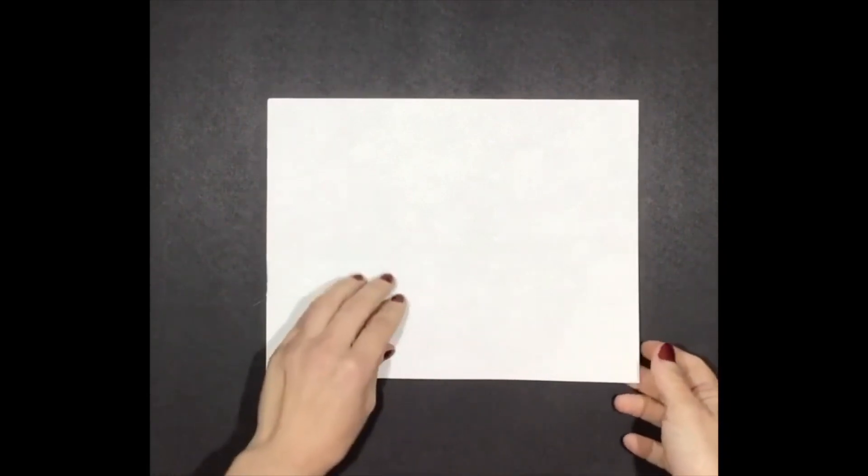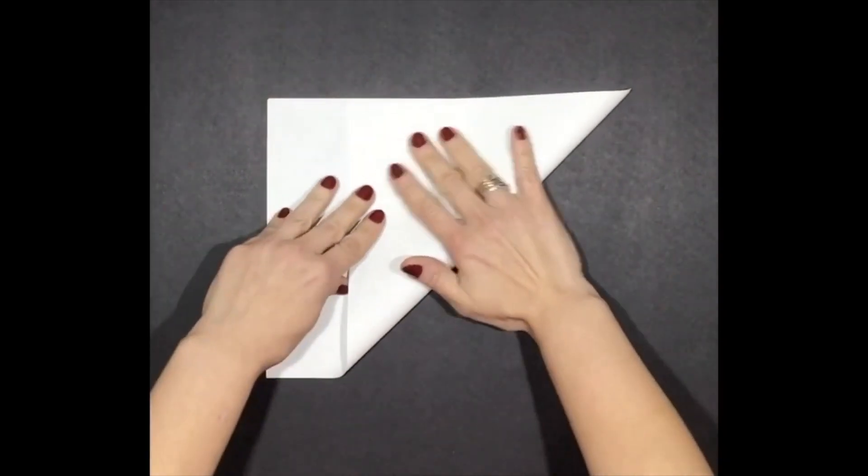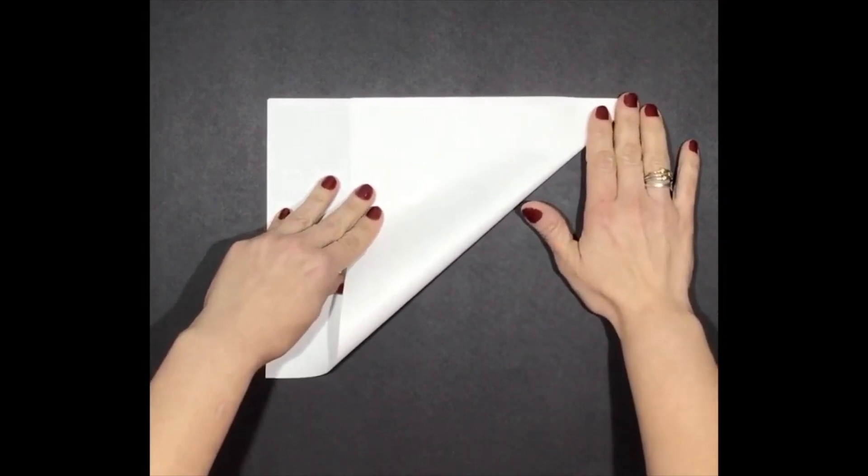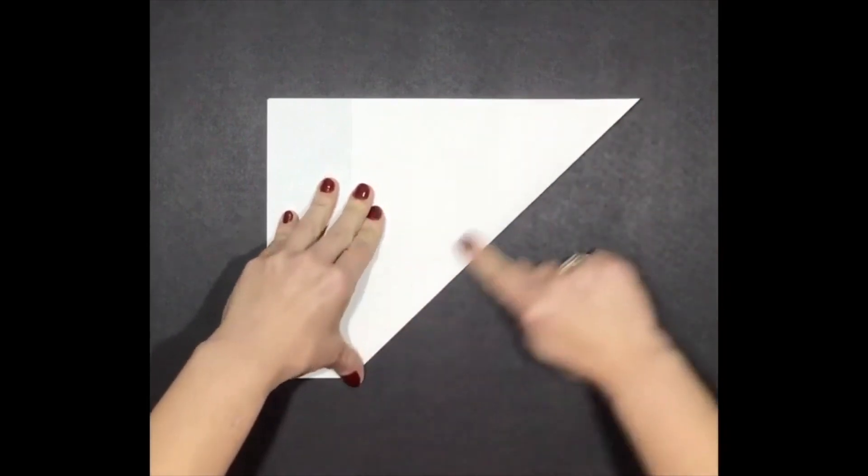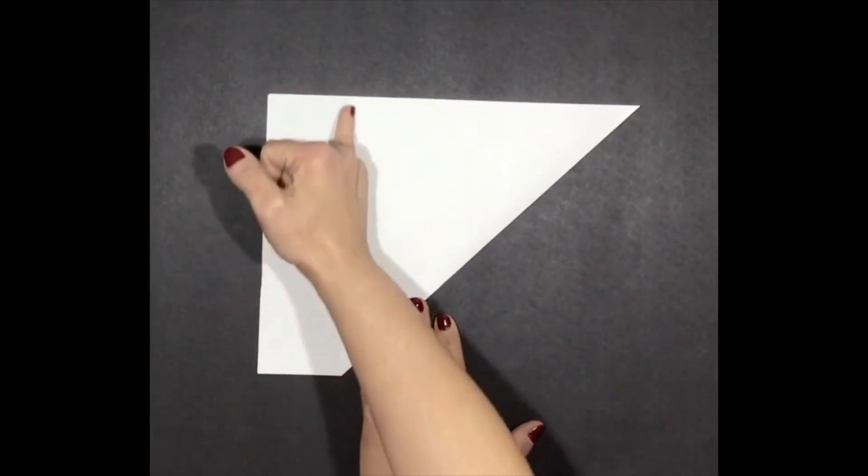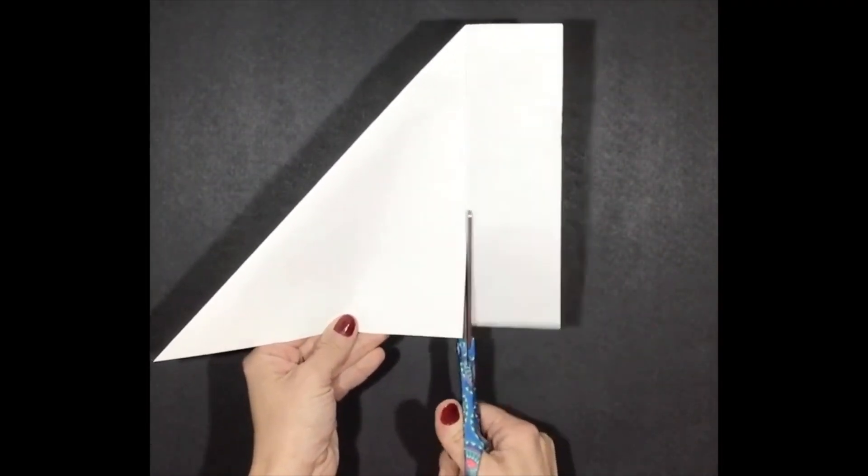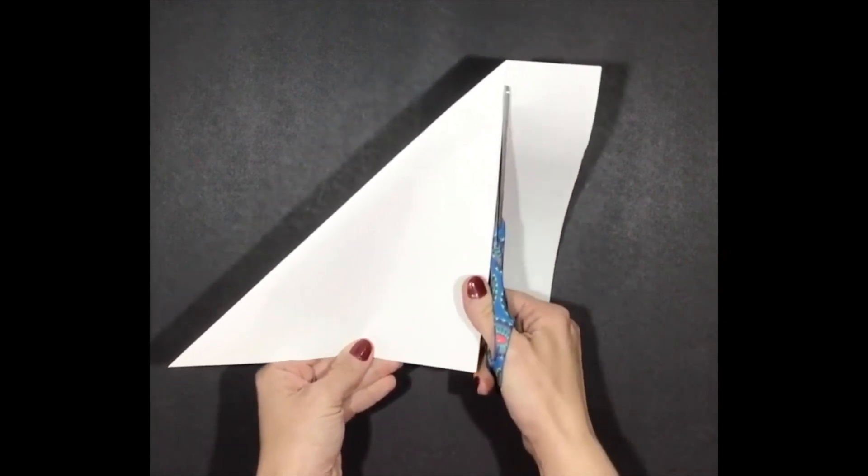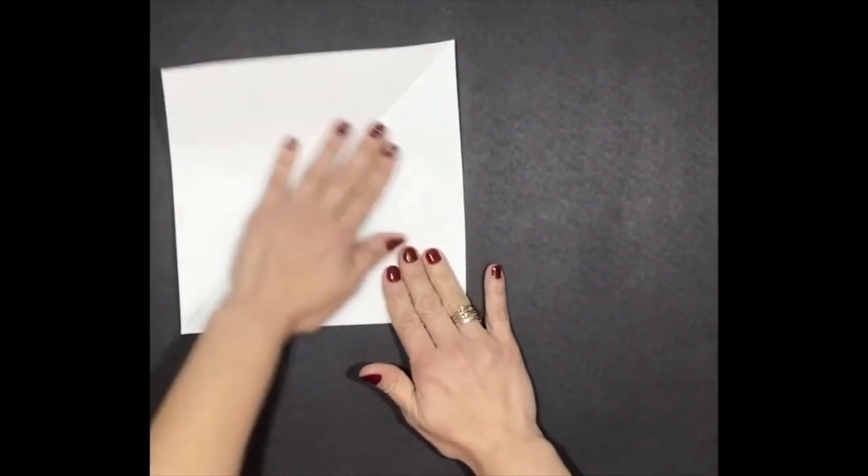So for today's project, when we're creating our blinking eye, you're going to need a square piece of paper. If all you have is a rectangular piece of paper, I'm going to show you how you can turn this into a square pretty quickly. The first thing you're going to do is take the corner of one of the rectangle parts and fold it up, making sure you get as close to perfect as you can so that it makes a nice sharp point. You're going to cut off this excess piece, and once you cut this off, it's going to make a perfect square. And when you open it up, you're going to have your square.